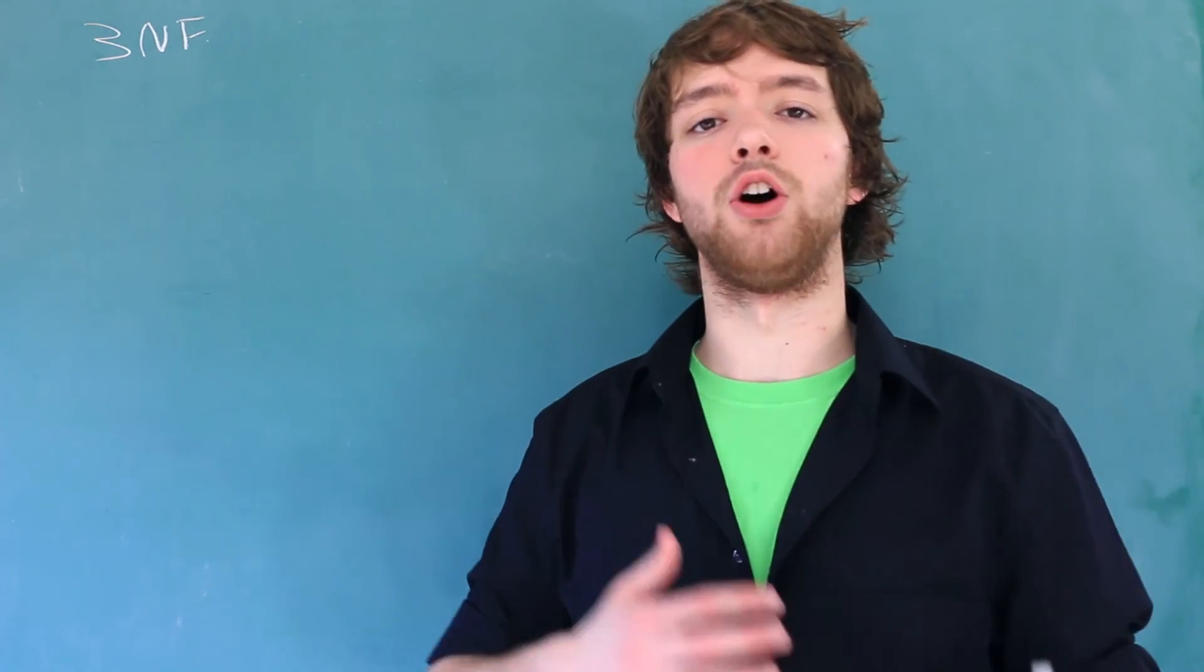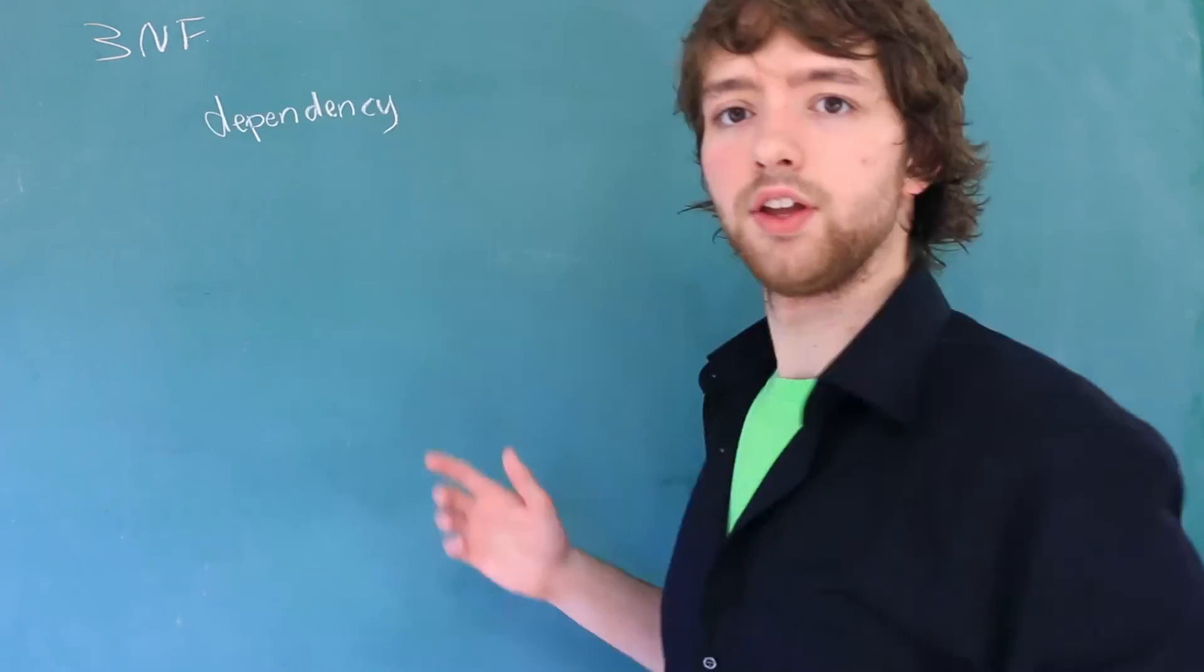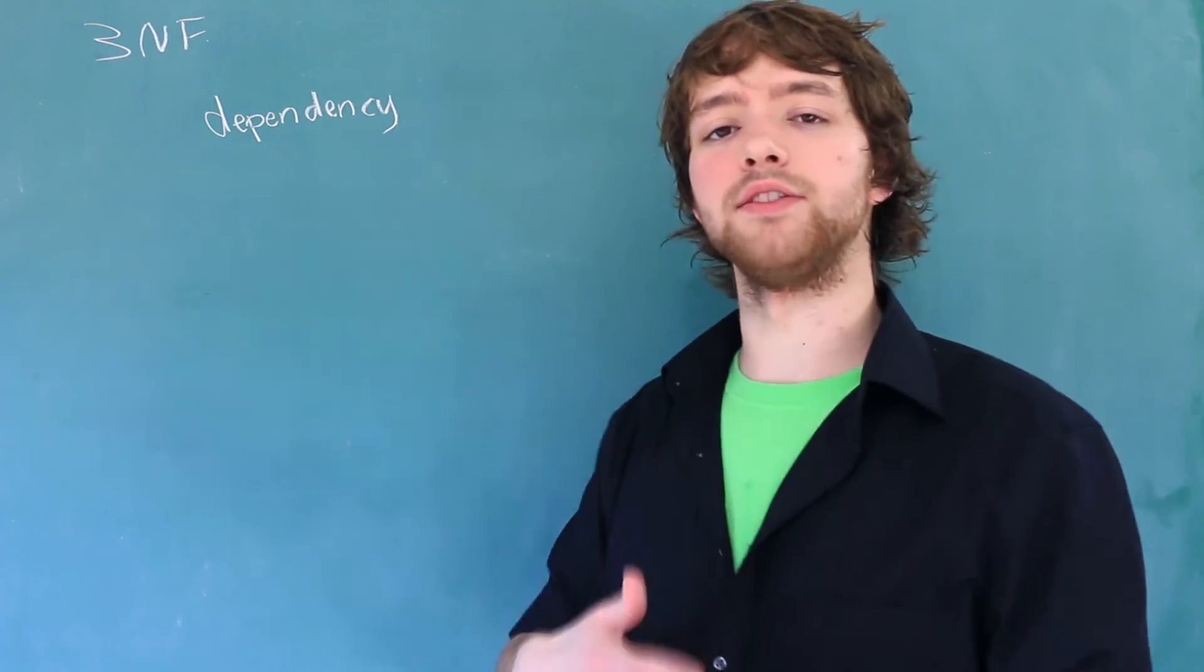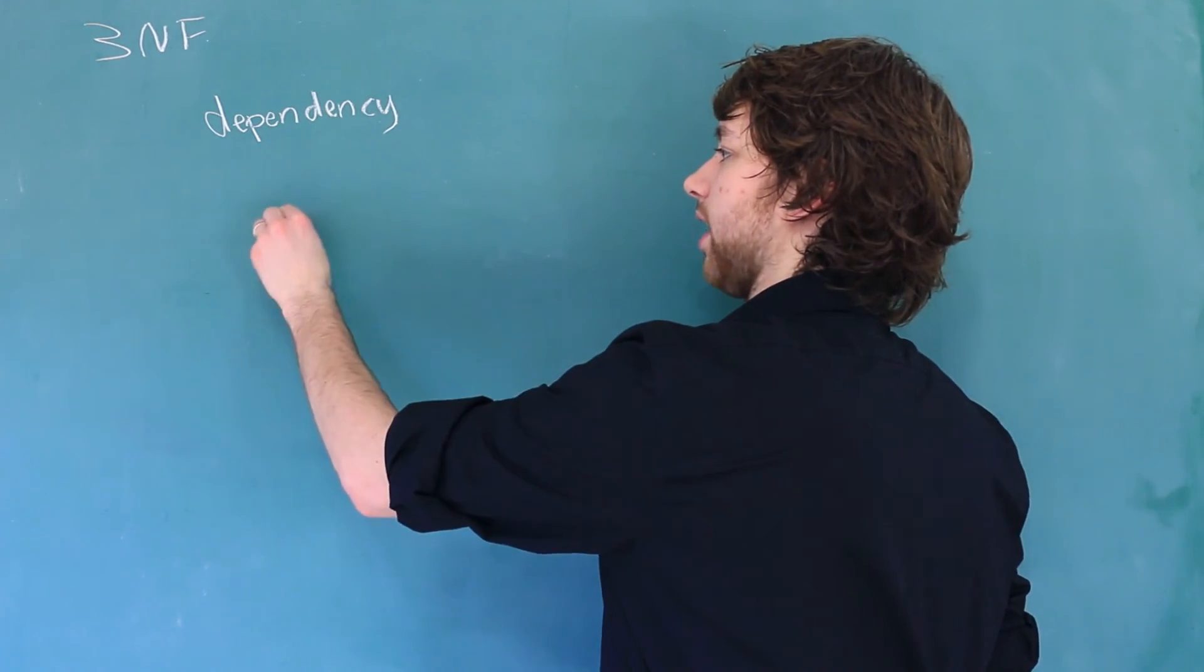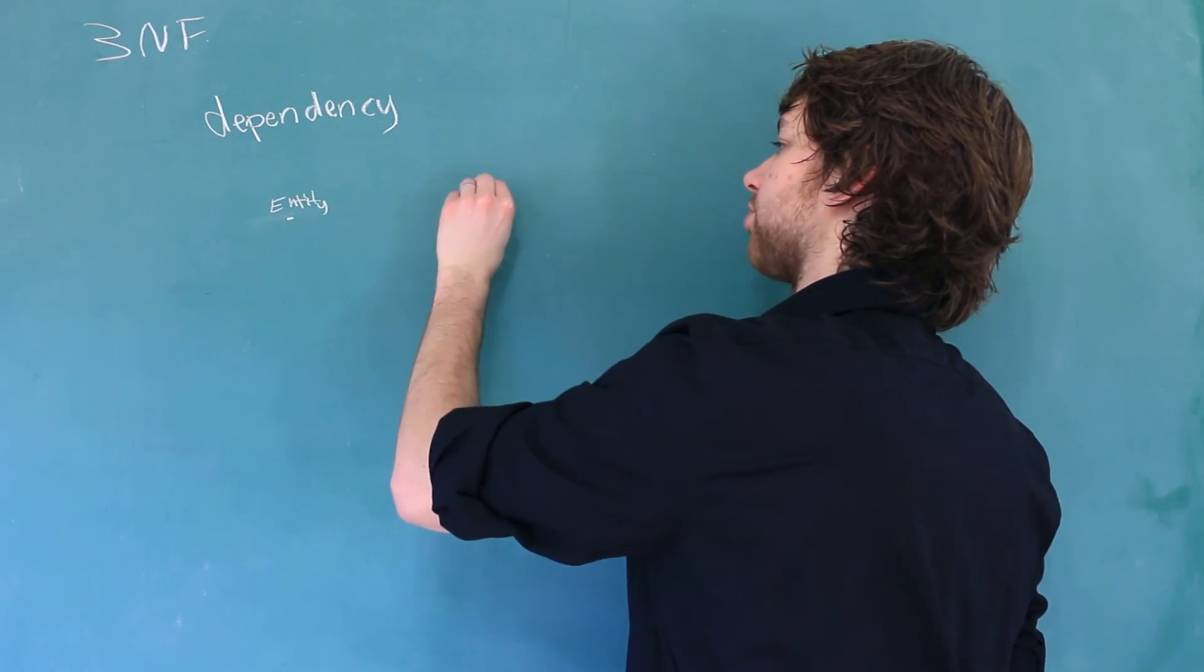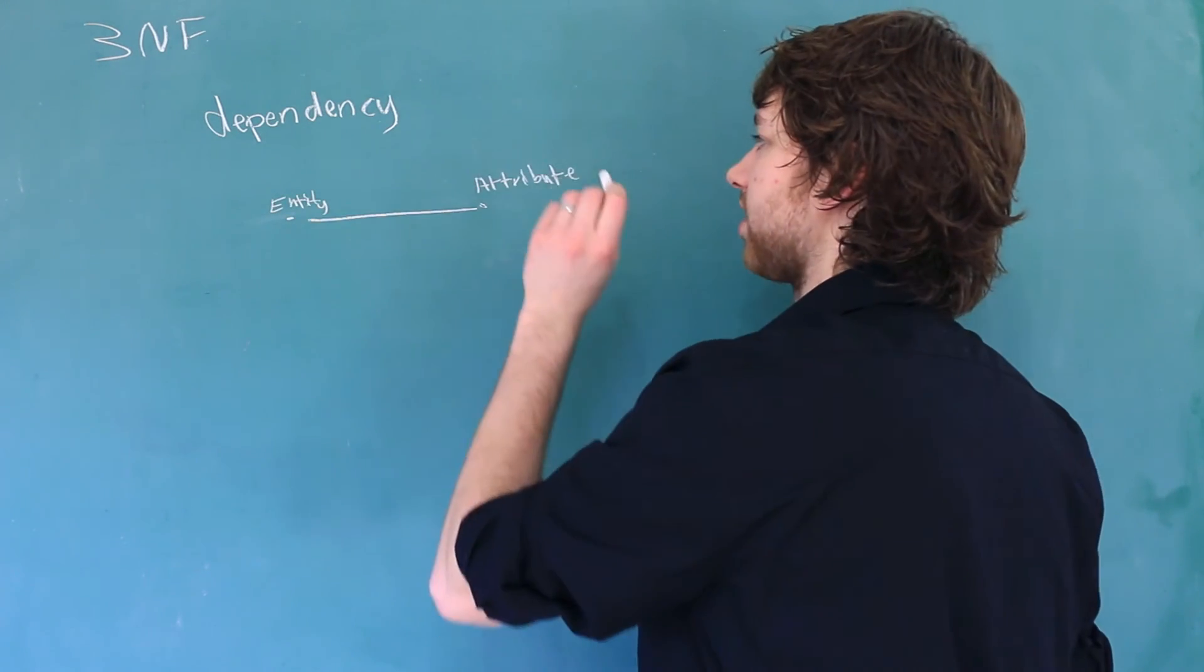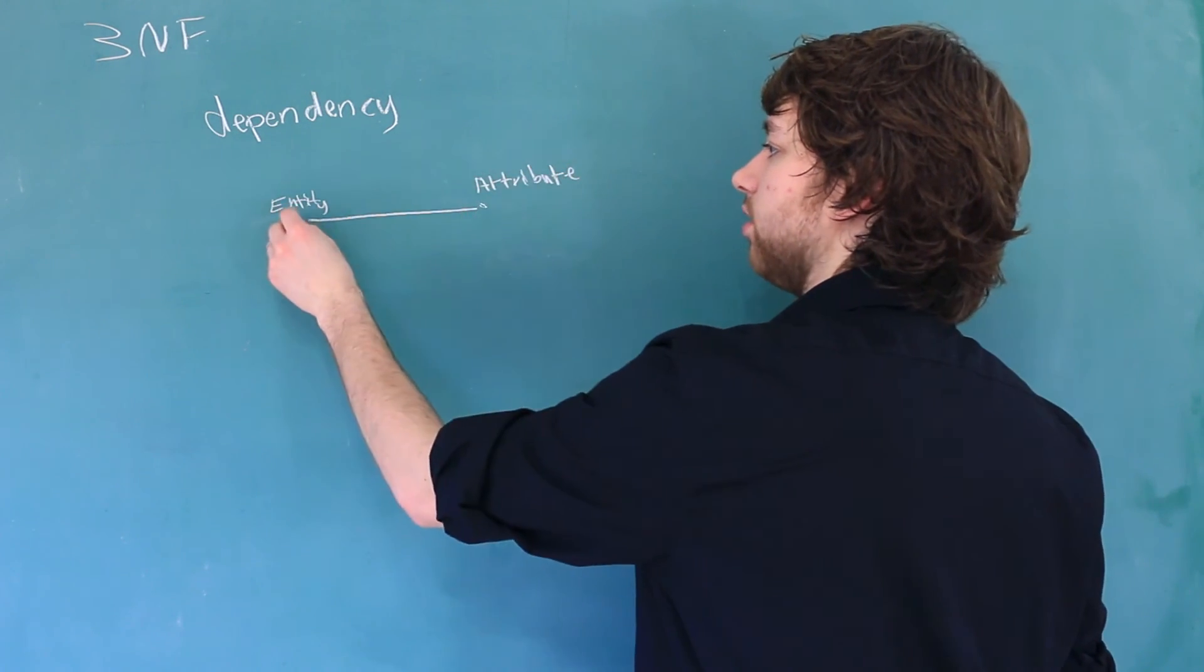Before we dive into third normal form, let's refresh our memories on the term dependency. This is when something depends on something else. The example I gave to describe a dependency is when you have an entity and an attribute describing that entity. You can say that this attribute is dependent on the entity.